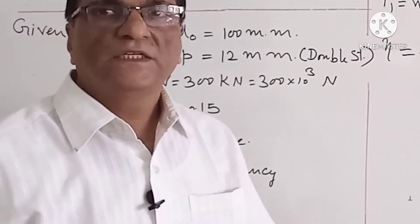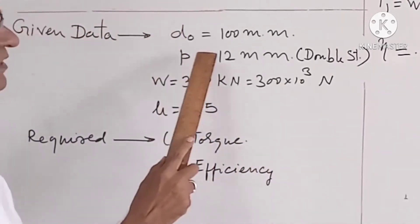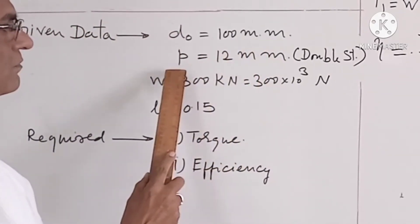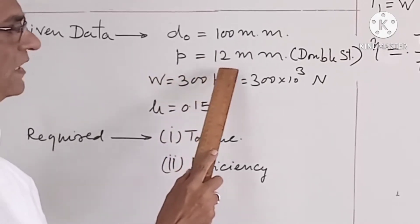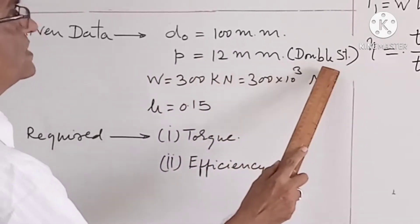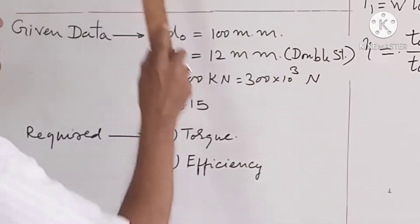we write down the given data. d₀ = 100 mm, pitch p = 12 mm, and it is a double start thread, so we have to calculate the lead.